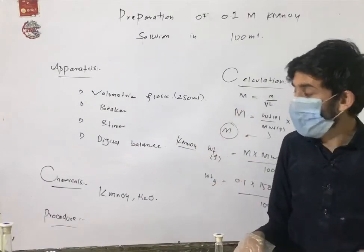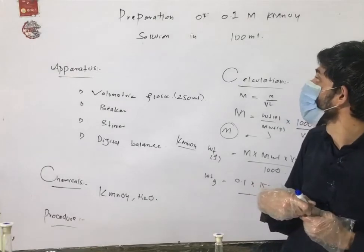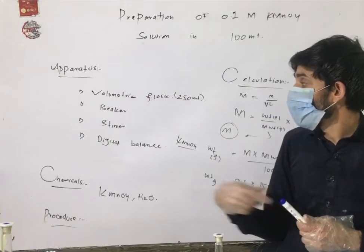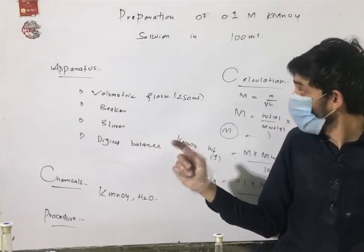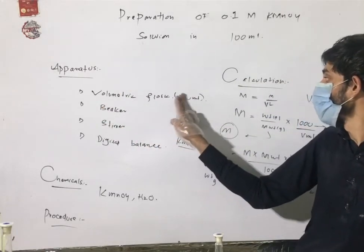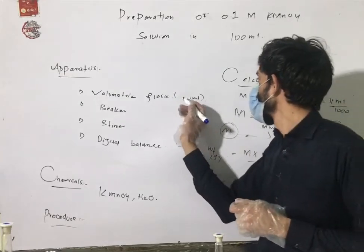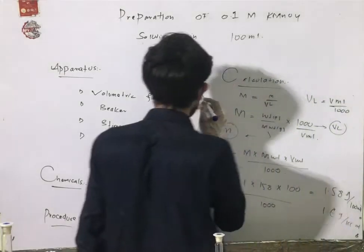This is the 0.1 molar solution. It is 100 ml. The required volume is 100 ml for the normal solution.